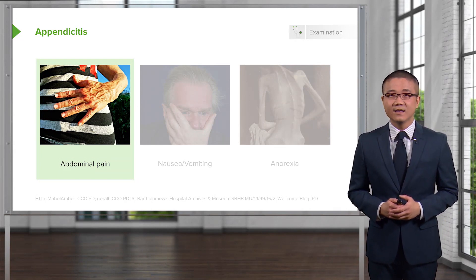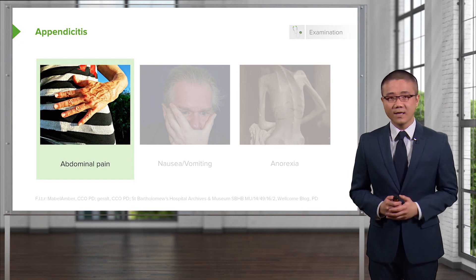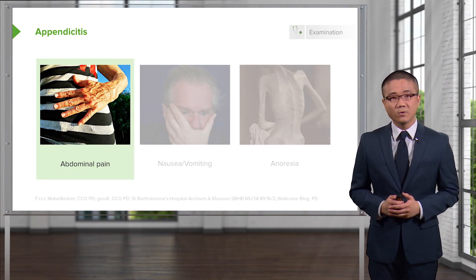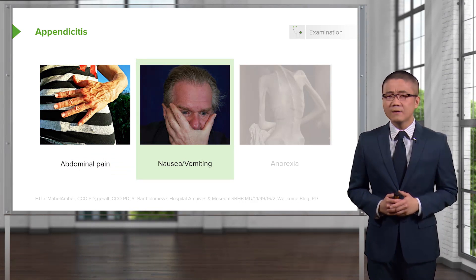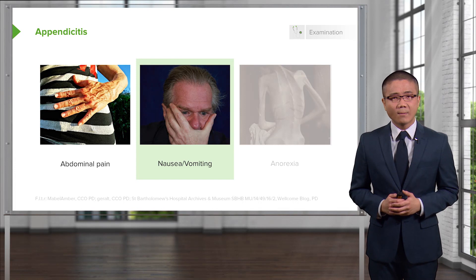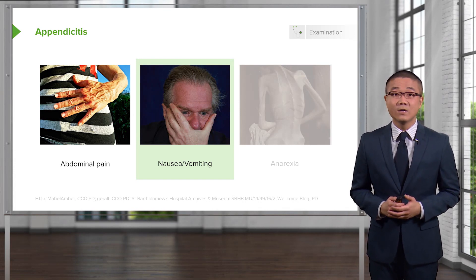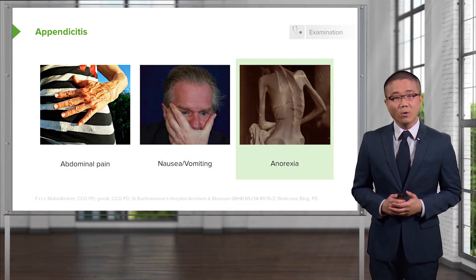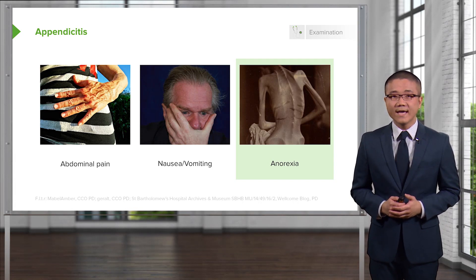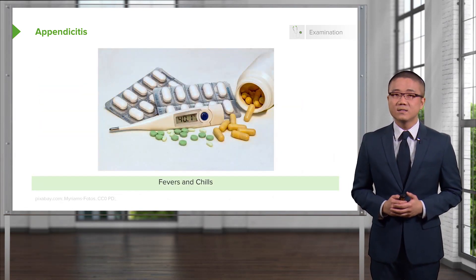Let's go over some classic history and physical findings. Abdominal pain, typically described as peri-umbilical with some radiation eventually to the right lower quadrant of the abdomen. Variable nausea and vomiting — this is complicated by the fact that when patients present with abdominal pain, nausea, and vomiting, we sometimes are thinking small bowel obstruction. Very classically associated with anorexia, or the lack of appetite. Remember, as with anything in clinical medicine, not all findings are going to be present. Some patients may also report fevers and chills.